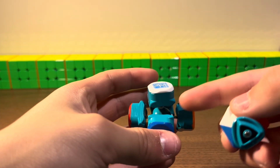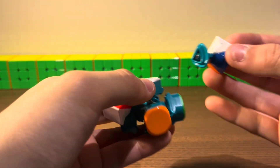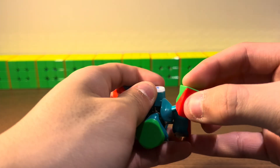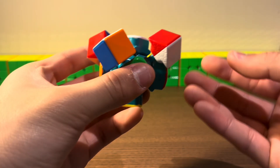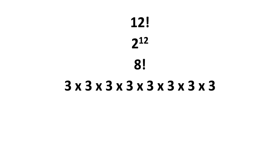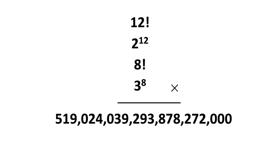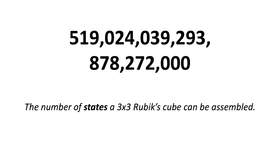Now let's repeat the process with the corners. Right now there are 8 spots. When we place each corner, the available spots decrease by one, giving us 8 factorial ways to place the corners. And each corner has 3 orientations, so we multiply by 3 to the power of 8. If we multiply all the numbers together, we get 519 quintillion, 24 quadrillion, 39 trillion, 293 billion, 878 million, 272 thousand — the total number of ways a 3x3 can be assembled.